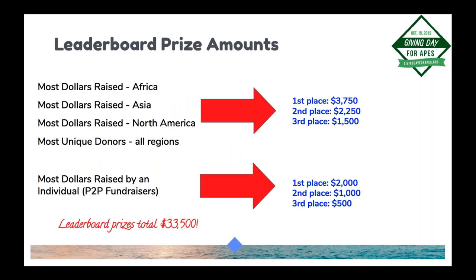The prize structure for the leaderboards is the same as last year, for total prizes of thirty-three thousand five hundred dollars across four leaderboards. The first place prize is three thousand seven hundred fifty dollars. The fifth leaderboard is for most dollars raised by an individual peer-to-peer fundraiser, with a first place prize of two thousand dollars. Your organization may have several peer-to-peer fundraisers listed individually on that leaderboard. Funds raised by peer-to-peer fundraisers are also included in the totals on the most dollars raised leaderboard, but you don't receive the donation twice.